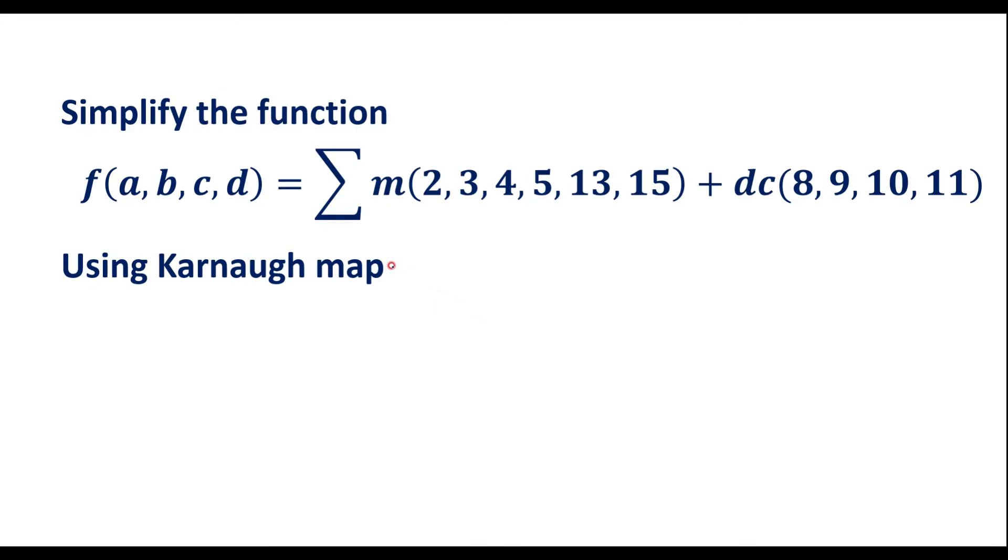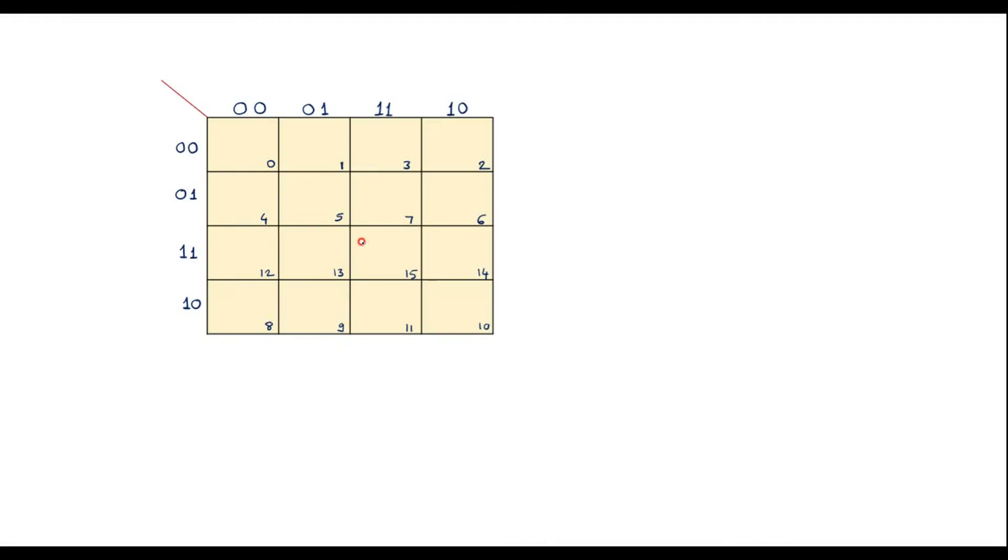Let me simplify this. To simplify this, the variables are a, b, c, d. We are supposed to use a 4 x 4 K-map. This is the 4 x 4 K-map. The variables are a, b and c and d.